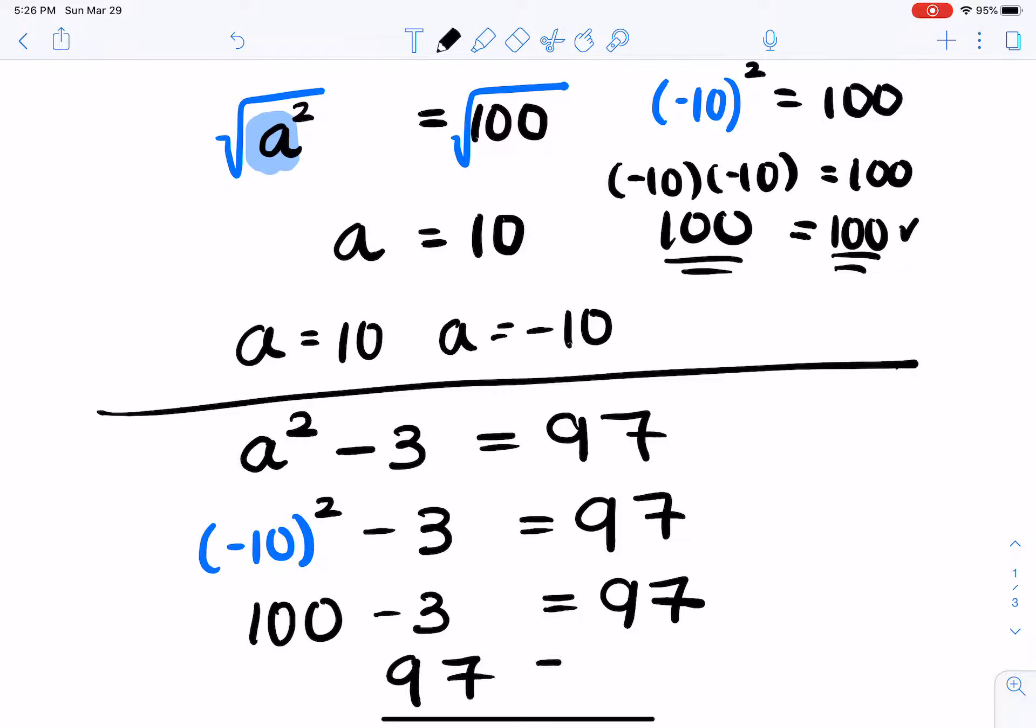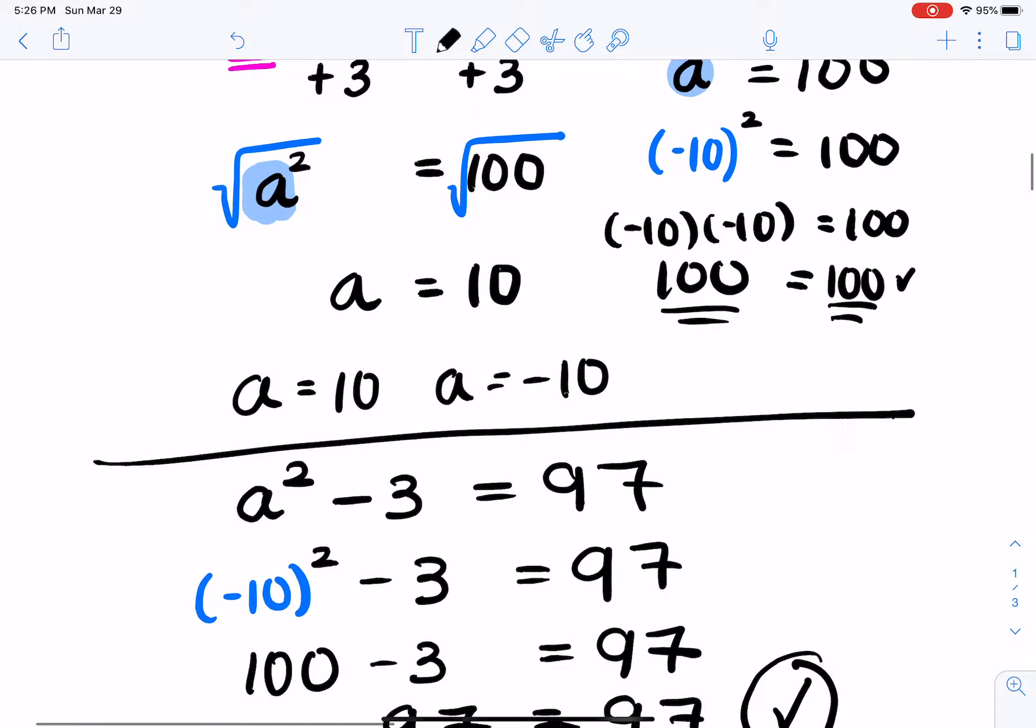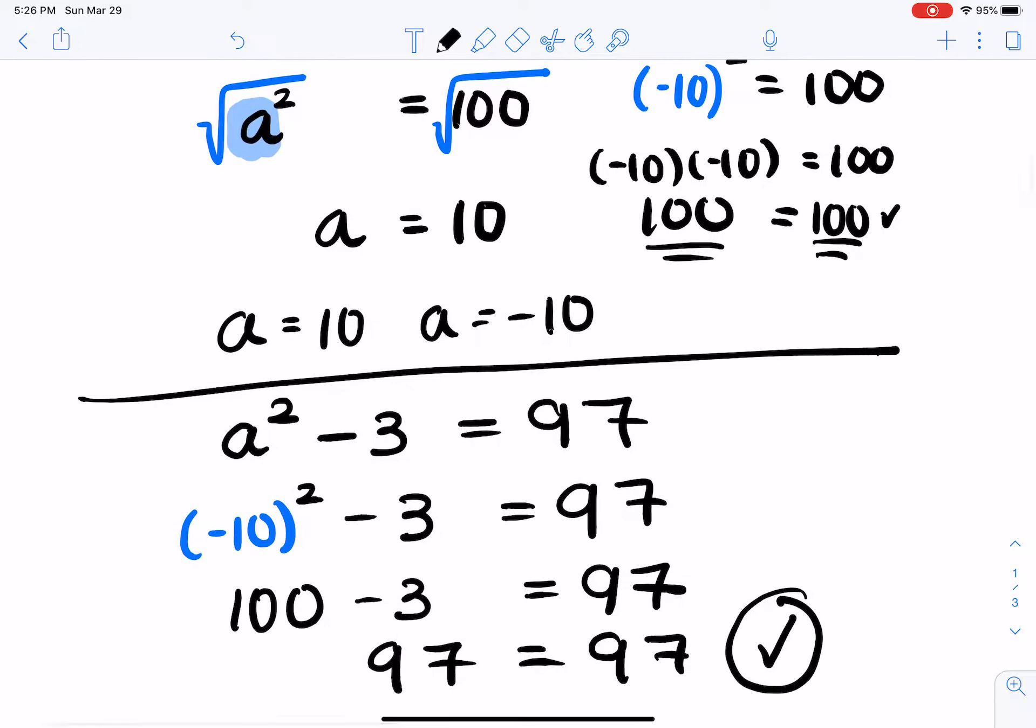And 97 does, in fact, equal 97. So we get a confirmation that this is the correct answer. So a does equal 10, a equals negative 10. Another short way to write this is a equals positive or negative 10. Both of these answers work.